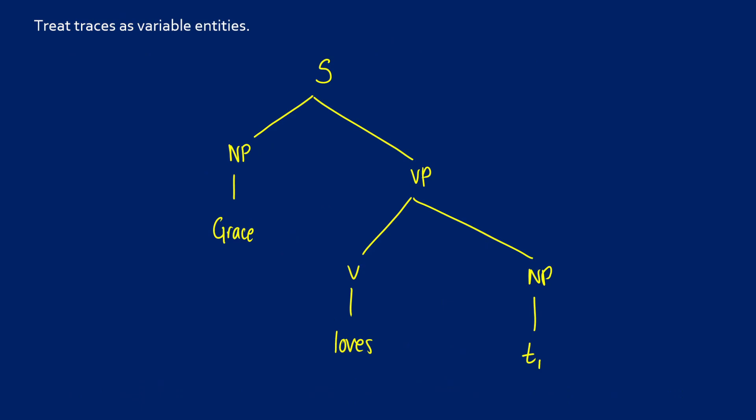What we're going to do is we're going to treat traces as variable entities. What this means is if we take a look at the types for this, so "loves" is an EET, our verb phrase will be an ET, our S will be T, "Grace" will be an E, and we're going to treat our trace as an E as well.